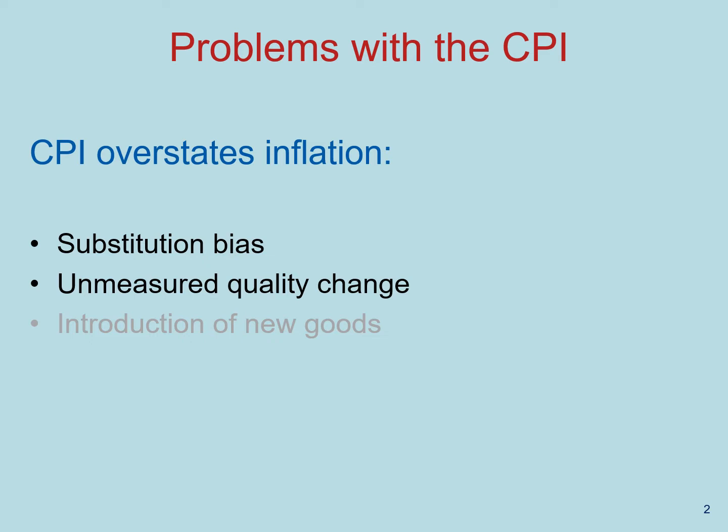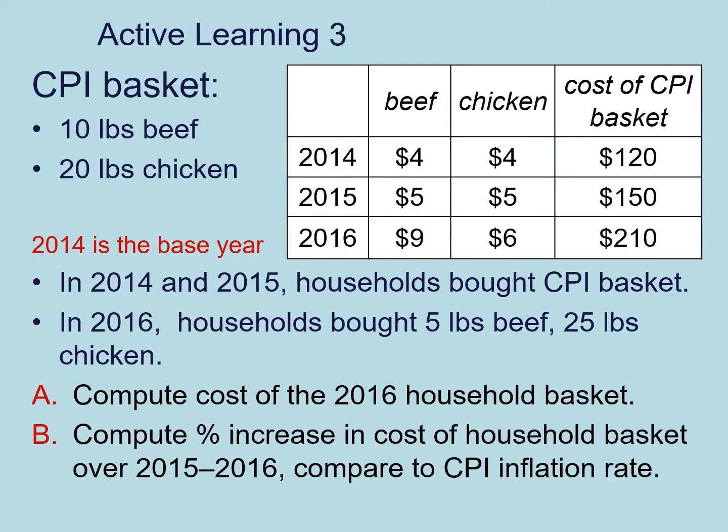These three problems are substitution bias, unmeasured quality change, and introduction of new goods. In this video, I will discuss the first two. Let's start with an example. This active learning exercise is also on Top Hat. Please take a minute and pause this video after the explanation and submit your answers through Top Hat.